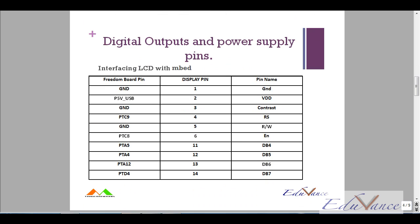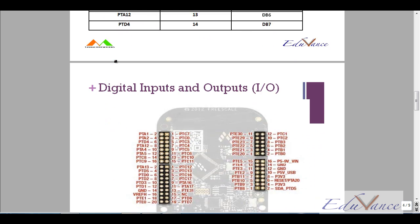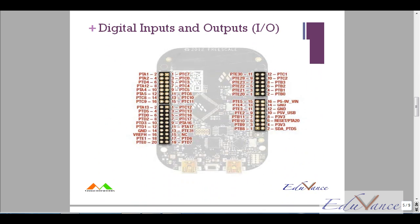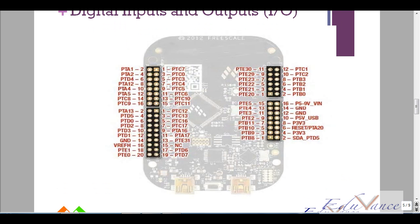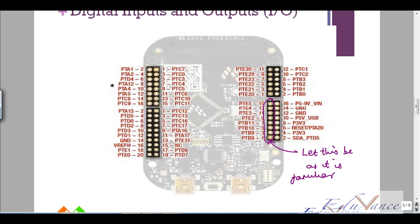The freedom board has a lot of pins - this is what the freedom board looks like. If you remember, in the matrix keypad program we used these pins for connecting to the matrix keypad. We will let those be as they are and we will use these pins here to connect to the LCD. Let's look at the connections.